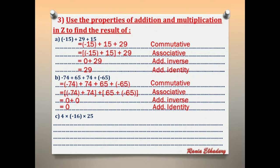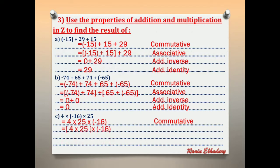Number 4, letter C: 4 × negative 16 × negative 25. We use golden numbers: 4 × 25 = 100. Step 1 — commutative: rearrange to 4 × 25 × negative 16. Step 2 — associative: put (4 × 25) in brackets. Result: 100 × negative 16 = negative 1600. This belongs to integers — closure.